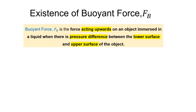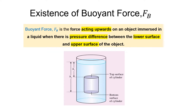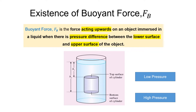How does the buoyant force exist? The buoyant force is the force acting upward on an object immersed in a liquid when there is a pressure difference between the lower surface and the upper surface of the object. Let's take a look at this diagram. When a cylinder is submerged in water, there is pressure acting on it. As we learned in the previous class, pressure in a liquid increases with depth. Thus, the top surface of the cylinder has lower pressure while the bottom surface has higher pressure. Since there is a difference in pressure on the cylinder, there will be a force exerted from the higher pressure to the lower pressure, and this force is what we call the buoyant force.